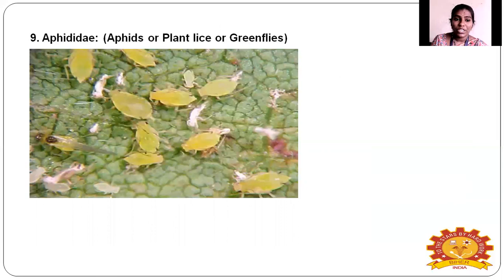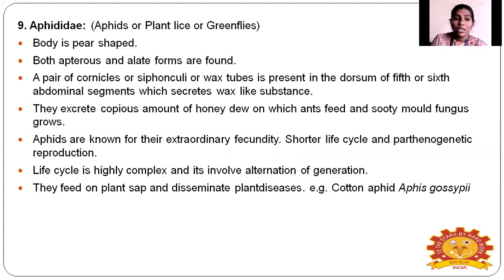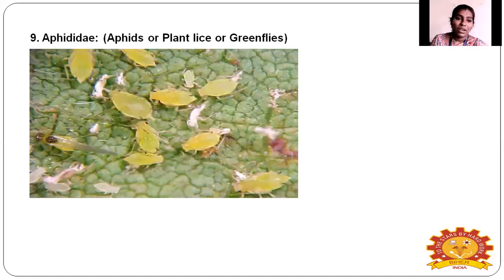Aphididae — the aphids. Both nymphs and adults are the same shape but differ in size. An important morphological feature is the cornicle, also called the wax tube, present on the sixth abdominal segment. Both whiteflies and aphids produce honeydew. Aphids are pear-shaped; both apterous and alate forms are found. Aphids are known for extraordinary fecundity, short life cycle, and parthenogenetic reproduction. The life cycle is highly complex and involves alternation of generations. Example: cotton aphid, Aphis gossypii.